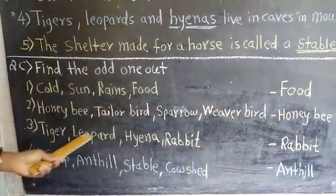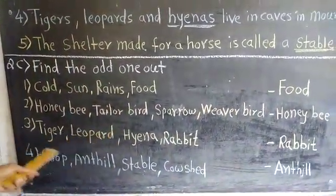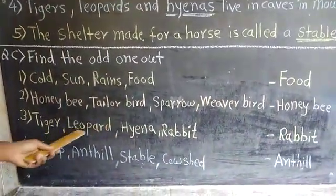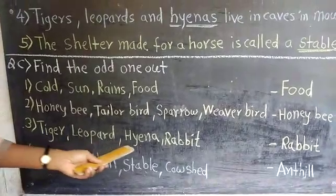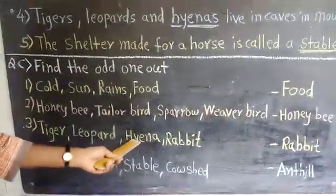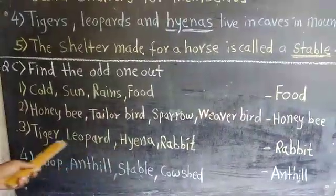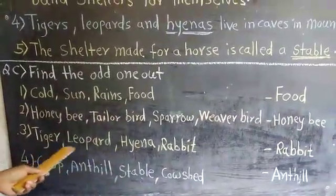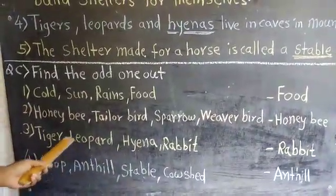Tiger, leopards, and hyenas live in a forest or jungle. Rabbit is a small animal, so rabbit is the odd one out.